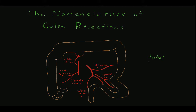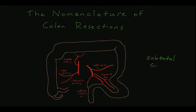A total colectomy requires ligation of all mesenteric vessels — the ileocolic vessels, the right, middle, and left colic vessels, and the sigmoid vessels — allowing removal of the entire length of colon. A subtotal colectomy is similar, except the sigmoid vessels are preserved, allowing for all of the colon except for the sigmoid colon to be removed.